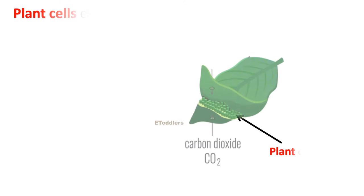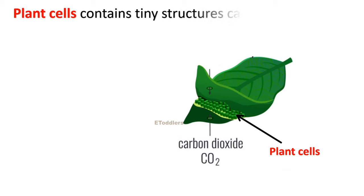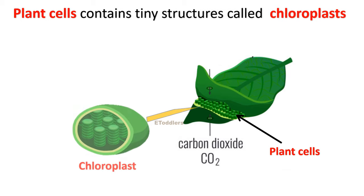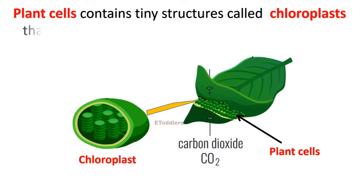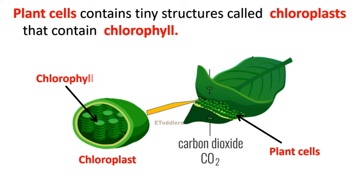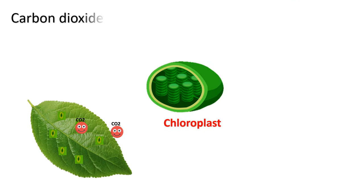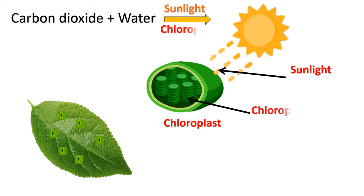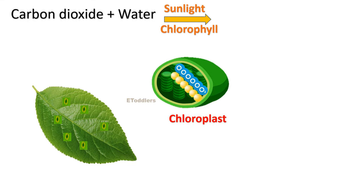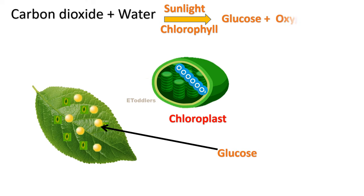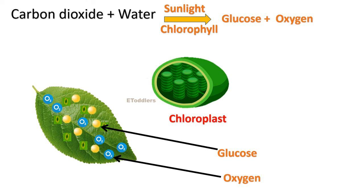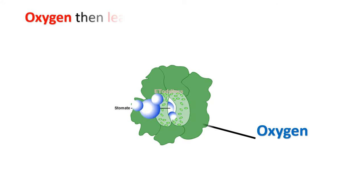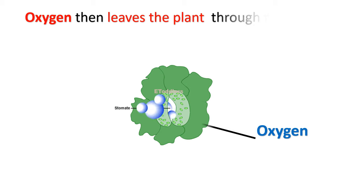Plant cells contain tiny structures called chloroplasts that contain chlorophyll. Carbon dioxide plus water are converted by light energy from sunlight, captured by chlorophyll, into glucose and oxygen. Oxygen then leaves the plant through the stomata.